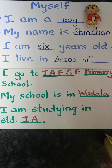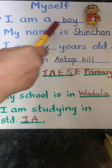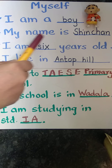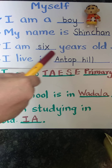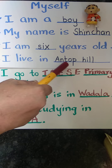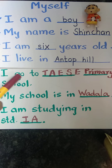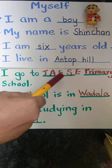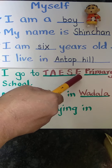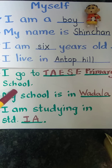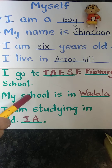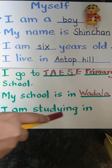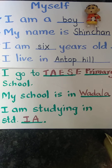Understood, children? Now we will read the full 'myself' once. I am a boy. My name is — write your name. I am dash years old — whatever you are, six years, seven years. I live in — where you live, that place name. I go to T.A.E.S. English Primary School. We should write all this, one letter each. My school is in Wadala. I am studying in standard first. Understood, children?